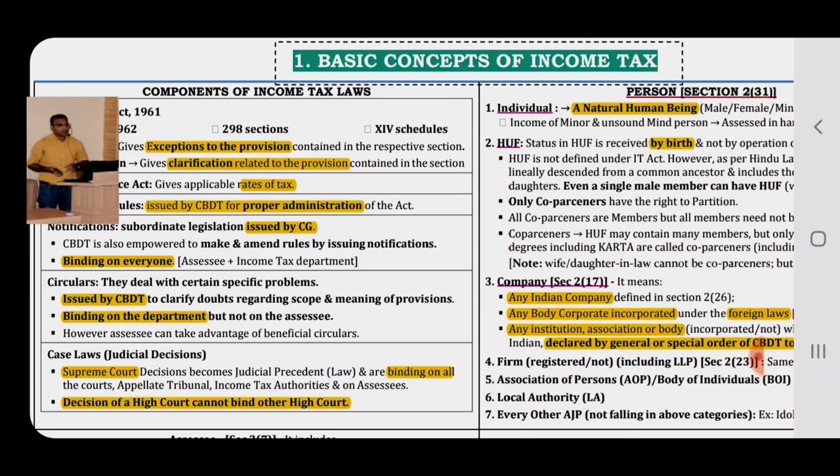Number 2 — Annual Finance Act gives rates of taxes. Number 3 — Income Tax Rules are generally issued by the CBDT for proper administration of the Act. Number 4 — Notifications are generally issued by the Central Government, and because they are issued by the Central Government they are binding on every assessee as well as the Income Tax Department. Number 5 — Circulars are generally issued by the CBDT, so they are binding on the Department only and not on the assessee. However, the assessee can take advantage of beneficial circulars.